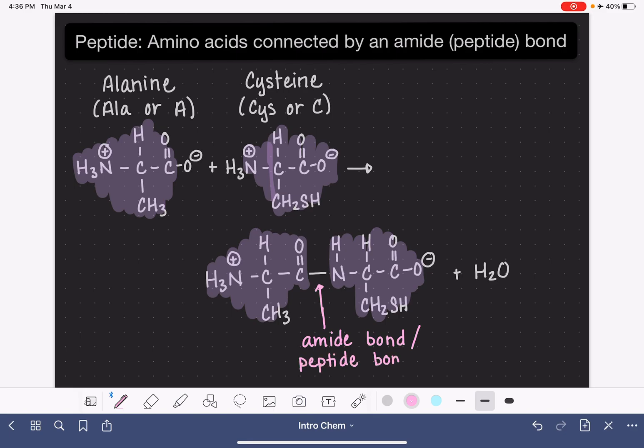What we've drawn here is considered a peptide because it's two amino acids. As long as we have at least two amino acids, we can call it a peptide.